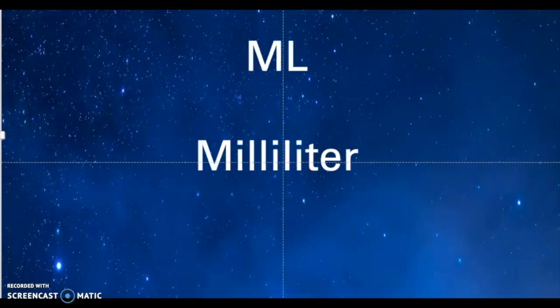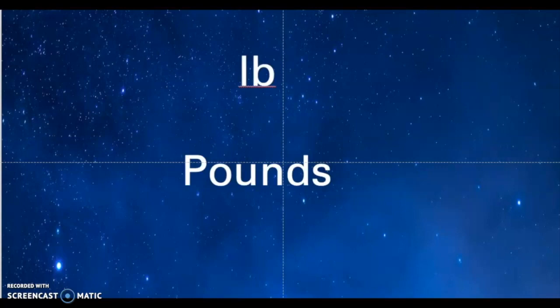ML is another common abbreviation that stands for milliliters. One liter is equal to 1,000 milliliters. LB stands for pounds — sometimes when you're weighing your patients, you need to know it's measured in pounds.